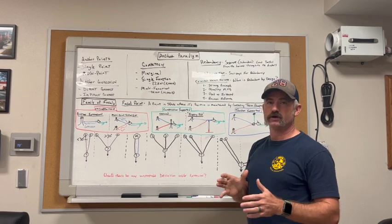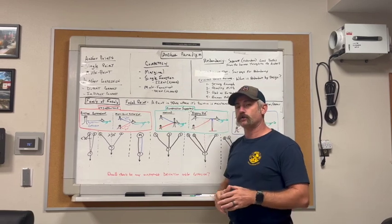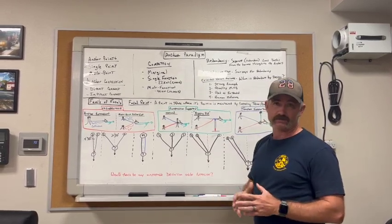Whereas a single function anchor can only take one of those, if you're looking for another number for that anchor point strength in a single function anchor, five thousand pounds is the ocean number.